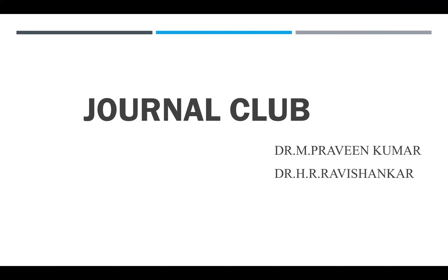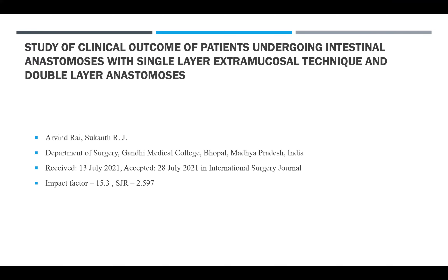Good evening to everyone. Today's topic on Journal Club would be a study of clinical outcome of patients undergoing intestinal anastomosis with single-layer extramucosal technique and double-layer anastomosis. It was published by Arvind Roy and Sukhan Tarji from the Department of Surgery, Gandhi Medical College, Bhopal, India, and the paper was received in the International Surgery Journal on 13 July 2021 and accepted on 28 July 2021. The impact factor of this journal is 15.3 and HCR is 2.590.